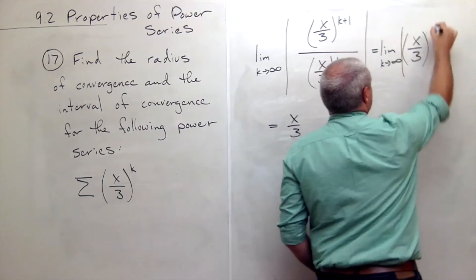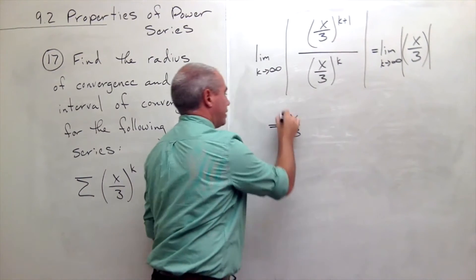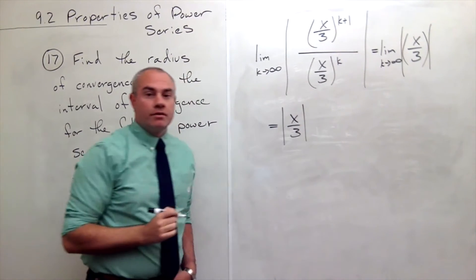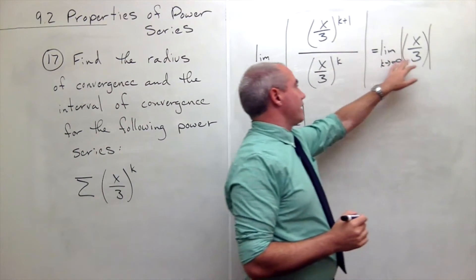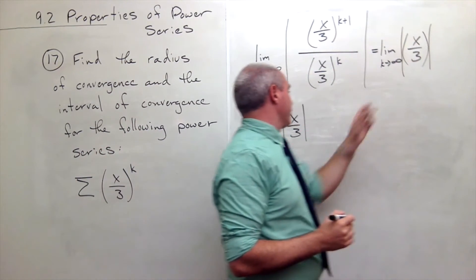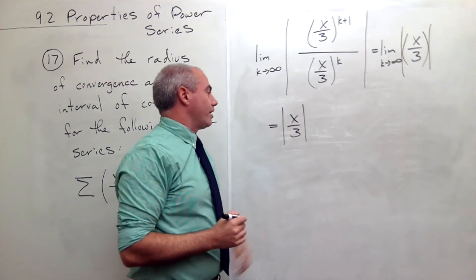Now, what I didn't do is I didn't keep my absolute value sign in there, and I need it. So we've got absolute value here, limit as k goes to infinity of absolute value of x/3, which is just the absolute value of x/3.